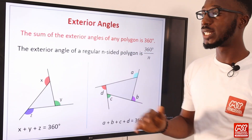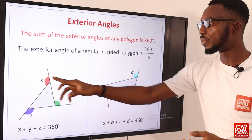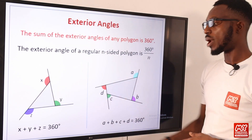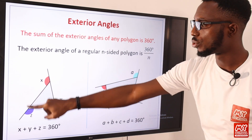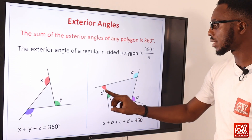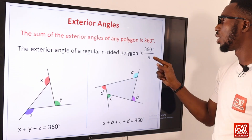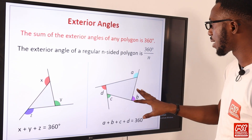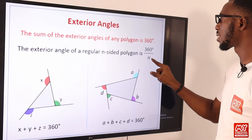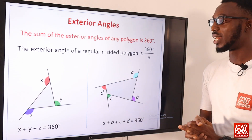The next theorem concerns the exterior angle. The sum of the exterior angles of any polygon is 360°. These exterior angles are made when there is an extension from a vertex. For a quadrilateral with sides A, B, C, D, each exterior angle is 360° ÷ 4 = 90°. So you can see the formula in application.